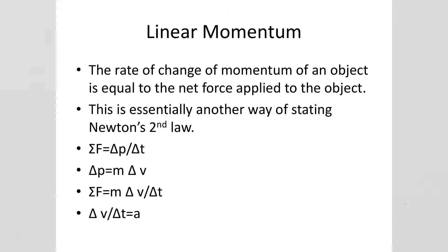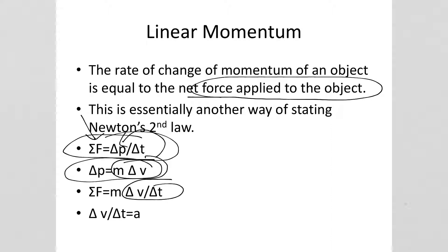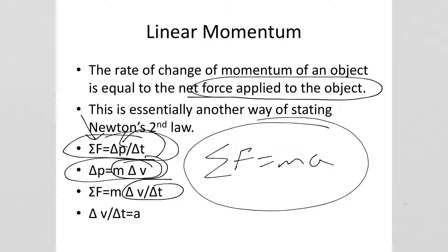Linear momentum can be thought of this way: the rate of change of momentum of an object is equal to the net force applied to the object. We could write that as net force equals change in momentum over change in time. This is essentially another way of writing Newton's second law. Because change in momentum is equal to M delta V, if we plug M delta V in for change in momentum, we get net force equals M delta V over delta T. Since delta V over delta T is acceleration, we can rewrite that as F net equals MA. So net force equals delta P over delta T is another way of writing Newton's second law.